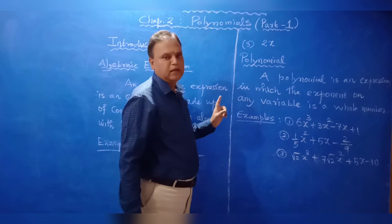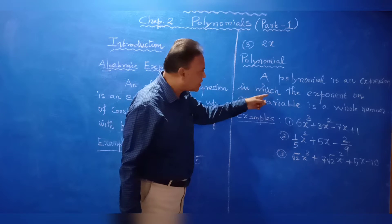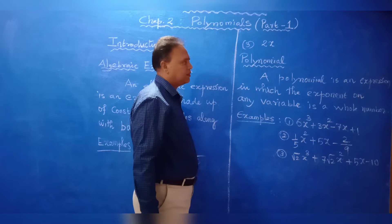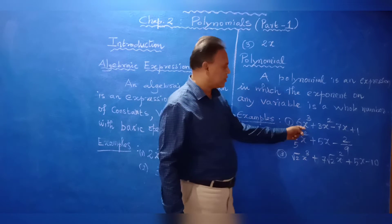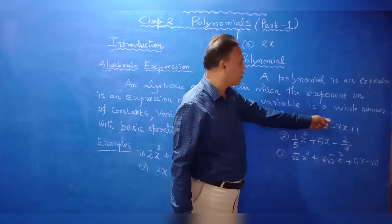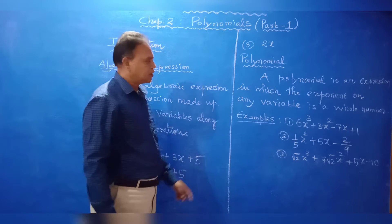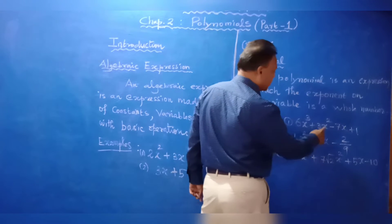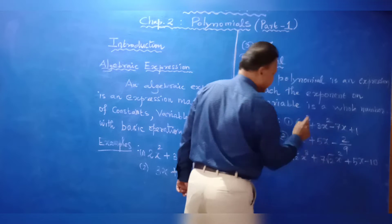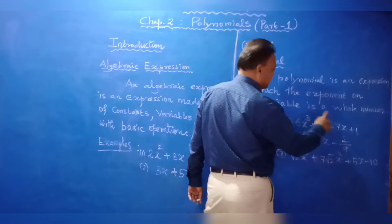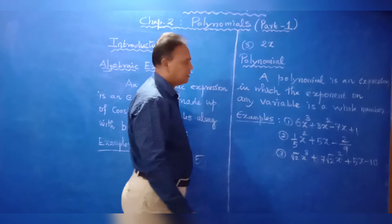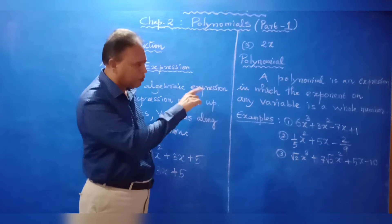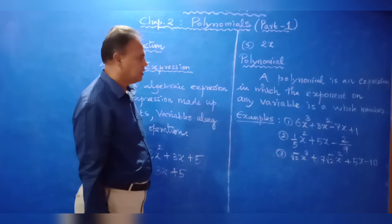Next, a polynomial is an expression in which the exponent on any variable is a whole number. The exponent means power — the power on any variable must be a whole number. A polynomial in X has one variable. All exponents must be whole numbers. Even the constant term can be written as 1 times X power 0, since X power 0 equals 1.